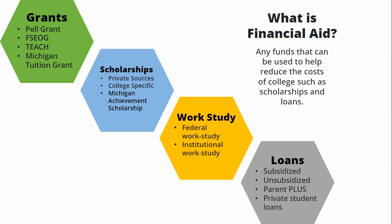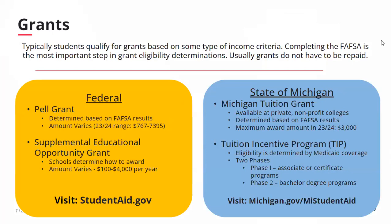We will begin by going over grants. Typically, grants are funds which are awarded based on need-based criteria and may not need a separate application. There are several different grants available through the FAFSA. The largest grant program is the Federal Pell Grant. The Pell Grant uses a calculation based on the individual's FAFSA data. While we don't know the Pell amounts for the 24-25 school year, in the 23-24 school year, awards ranged from $767 to the maximum of $7,395.